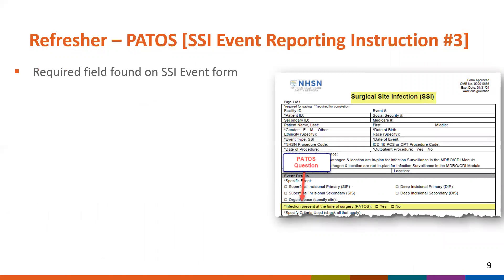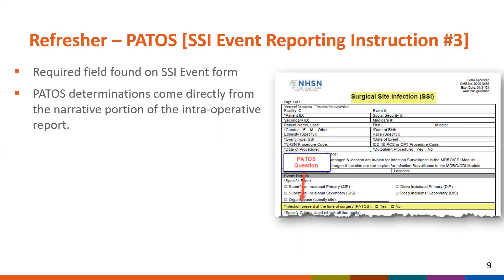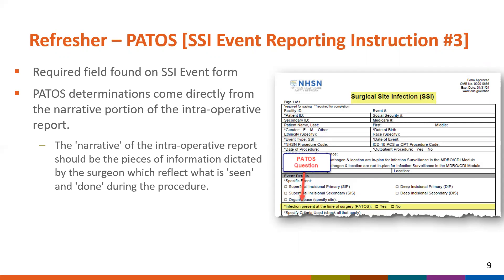We receive several questions about PATOS weekly. As a reminder, PATOS is a required field found on the SSI event form. You only review to determine PATOS if an SSI is identified within the surveillance period following an NHSN operative procedure. PATOS determinations come directly from the narrative portion of the intraoperative report. The narrative of the intraoperative report should be the pieces of information dictated by the surgeon which reflect what is seen and what is done during the procedure.